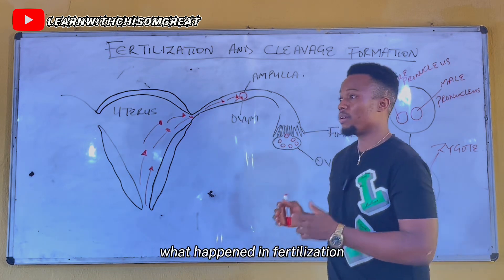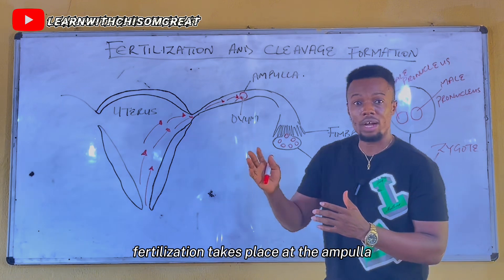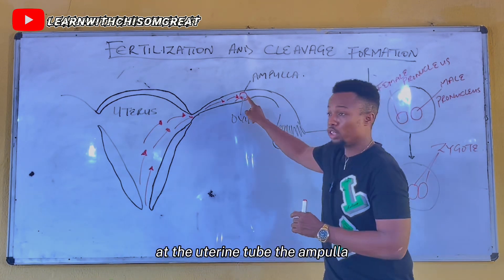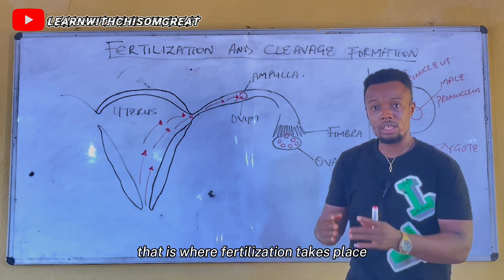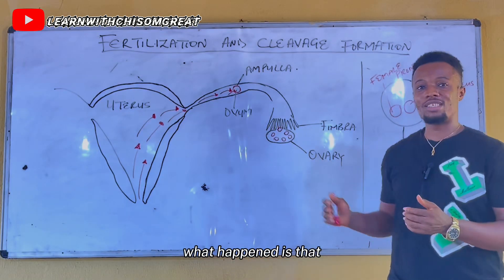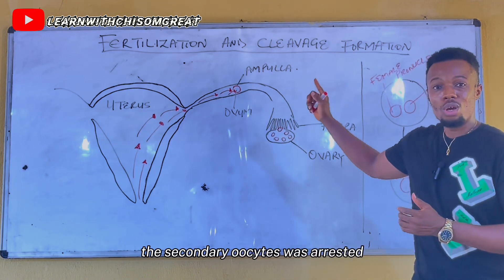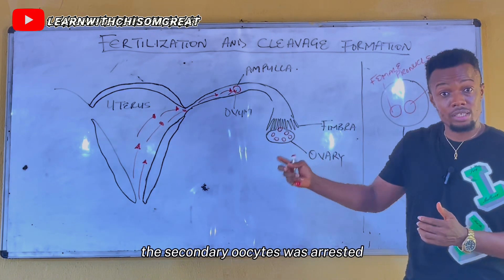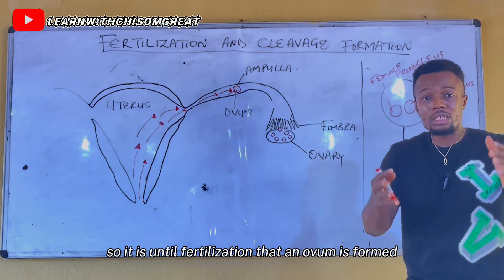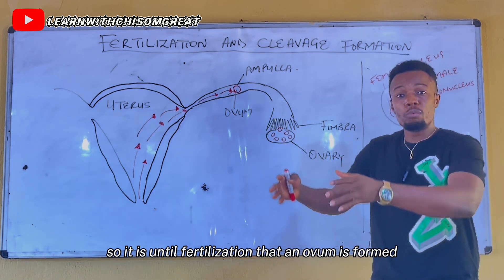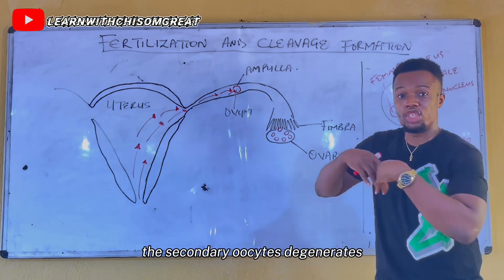So what happens in fertilization? Fertilization takes place at the ampulla part of the uterine tube. During oogenesis, the secondary oocyte was arrested at the metaphase stage. It is until fertilization that an ovum is formed, but if fertilization does not occur, the secondary oocyte degenerates.